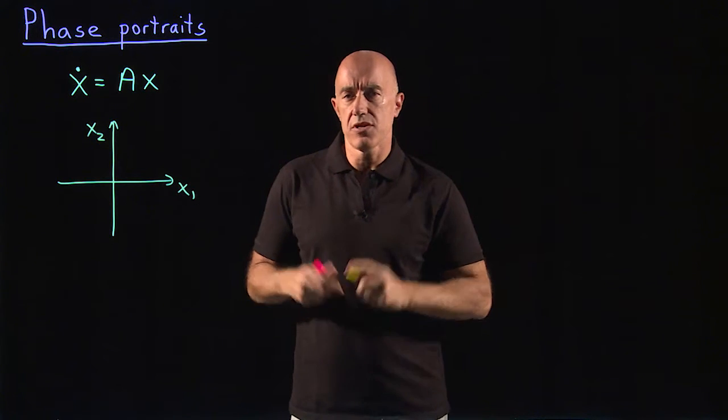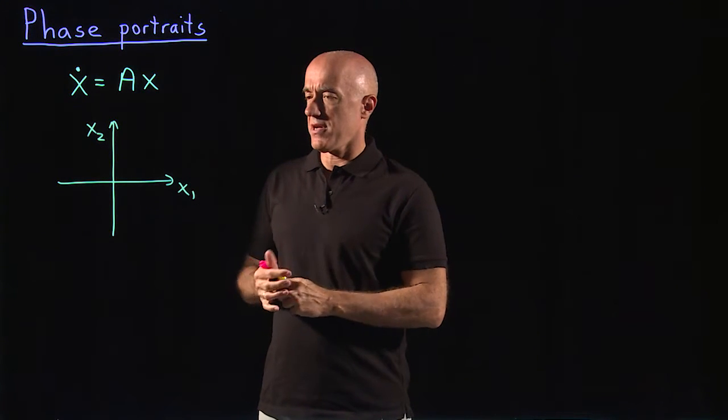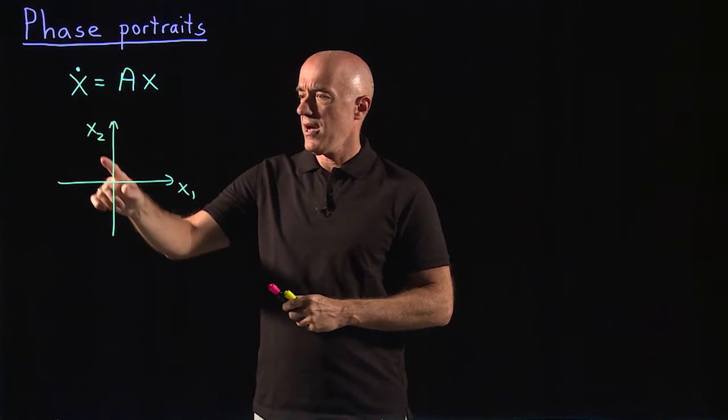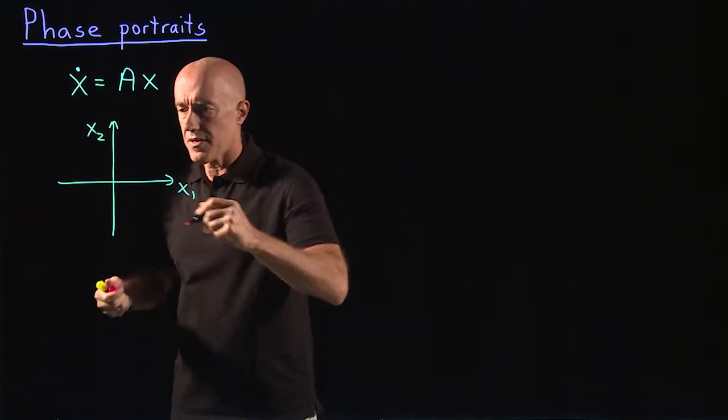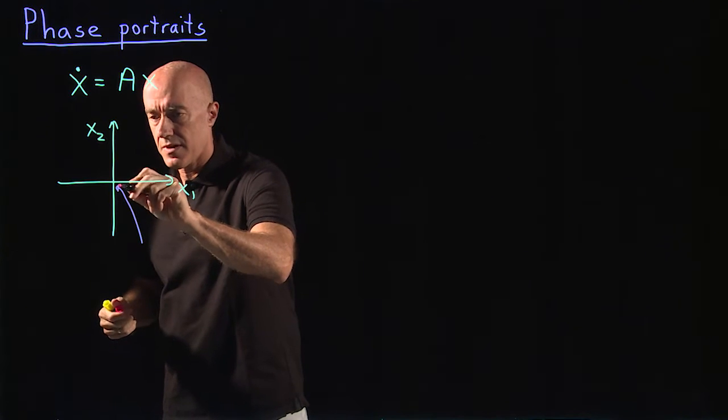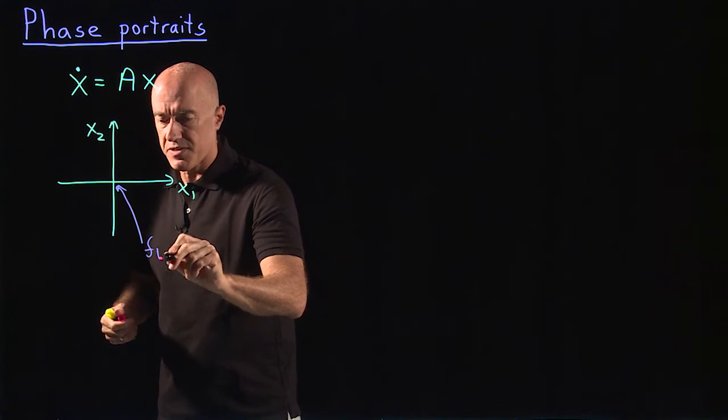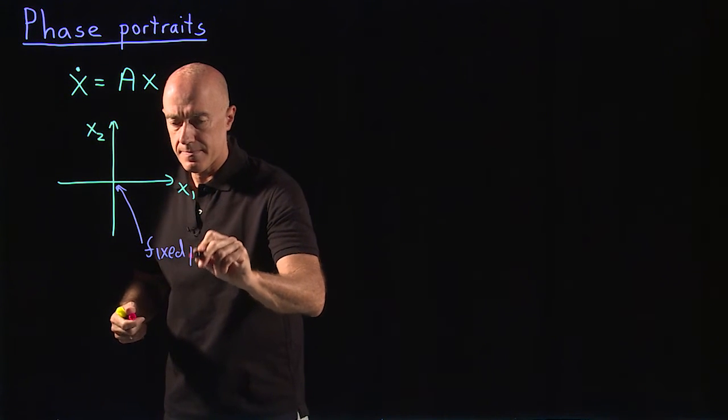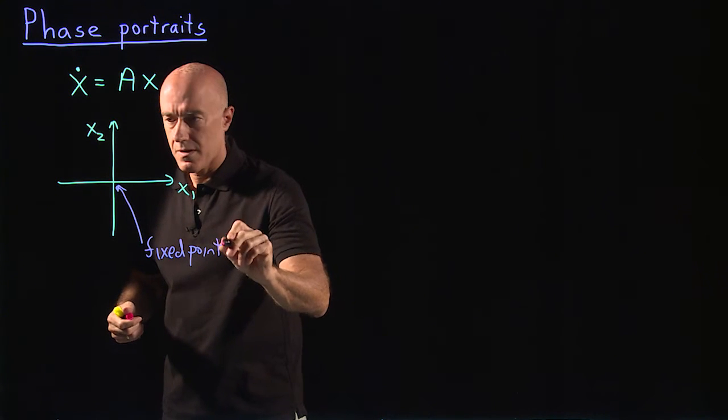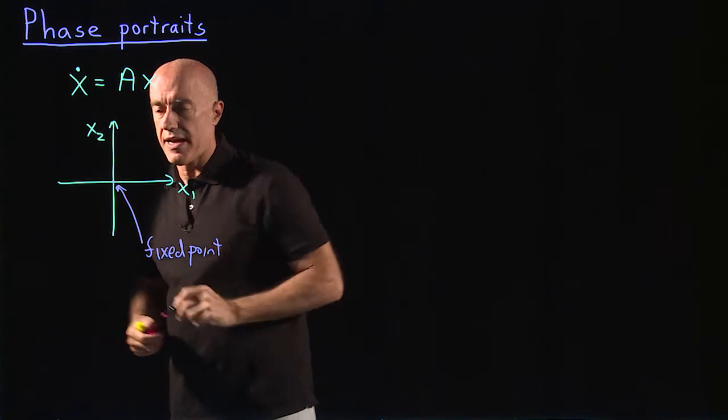First we have to say something about this solution. The origin here, the zero, zero value, is called a fixed point. So that's the point right at the origin.